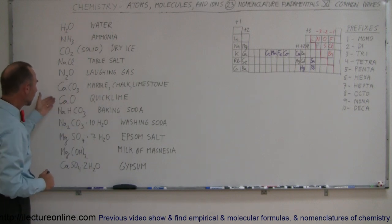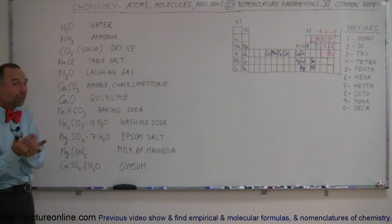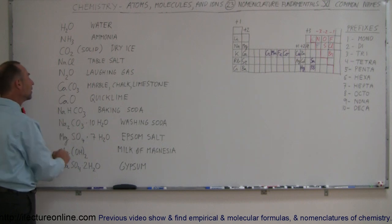Quicklime is calcium oxide. Now baking soda, the stuff you have in your refrigerator in little boxes, that's called sodium hydrogen carbonate or baking soda for the common name.